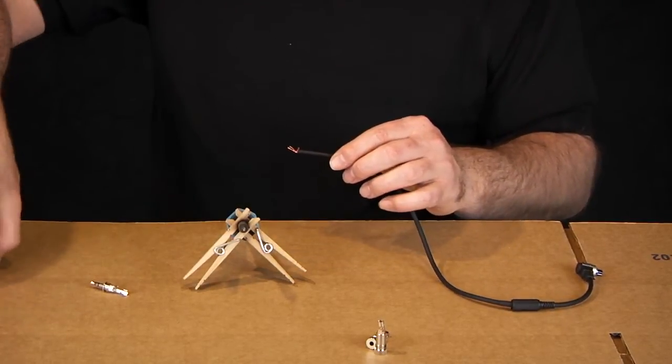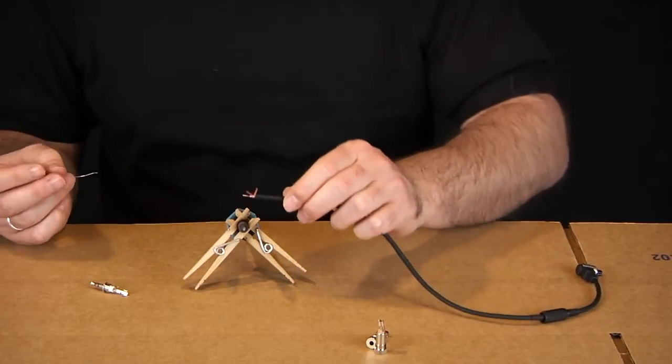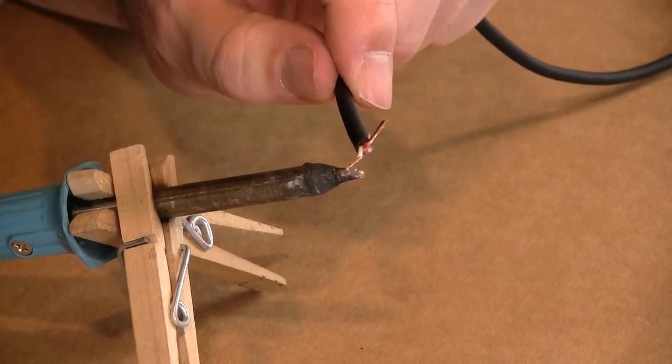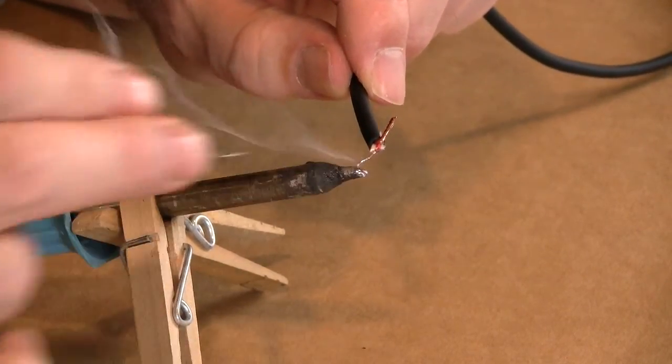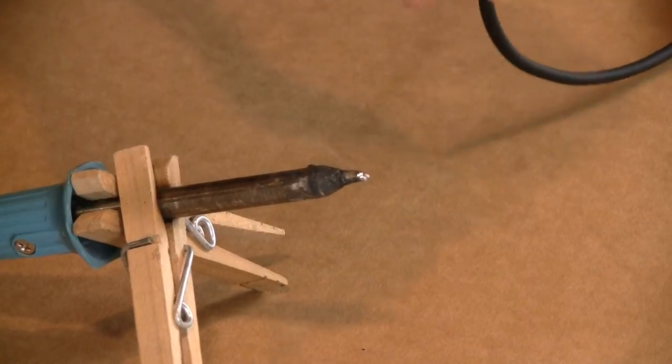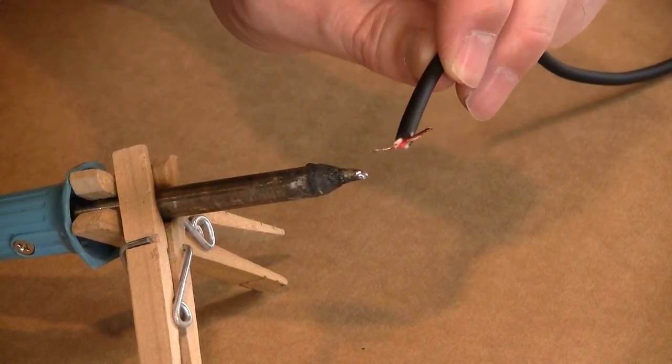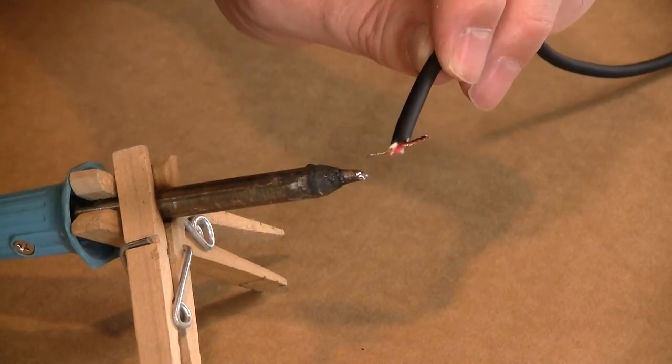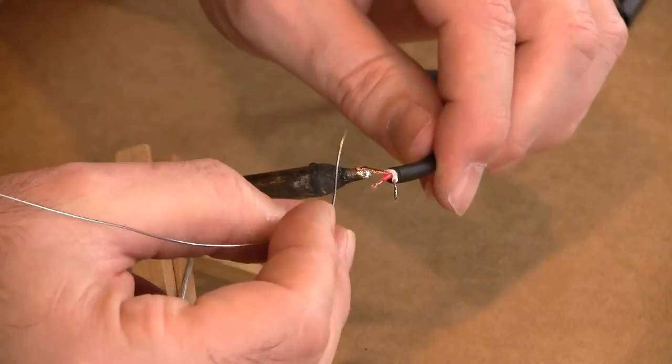The next thing you're going to want to do is you're going to want to tin the wires. They call it tinning the wires. And what you do is you lay the wire onto your soldering iron and touch a little bit of solder in there. And that will tin the wire. And that makes it much easier to solder onto your connector. So go ahead and tin all of your wires.